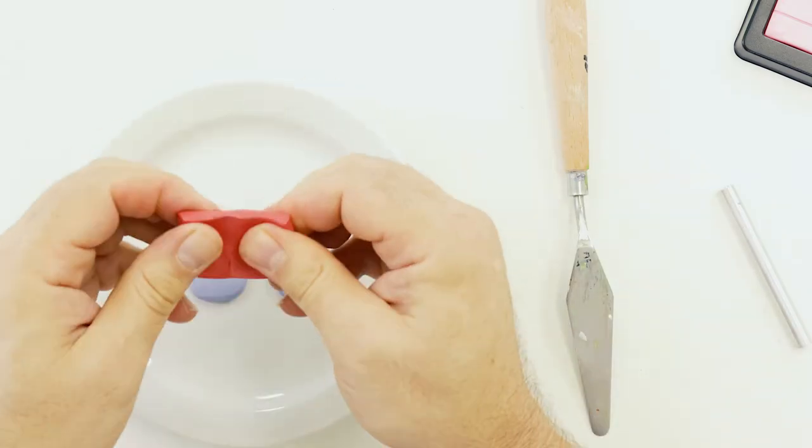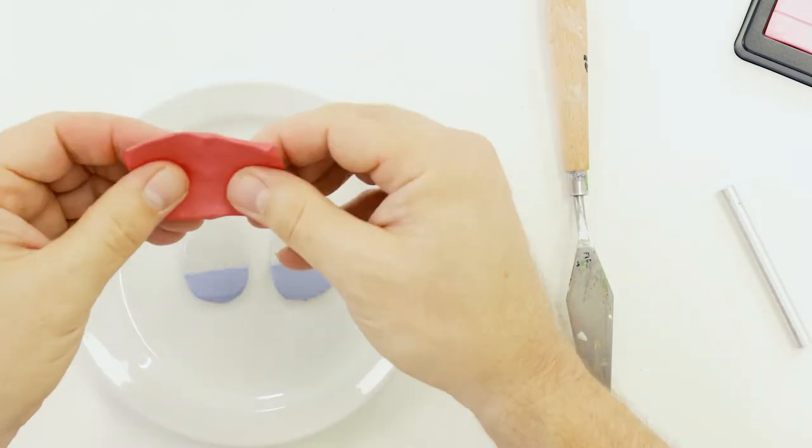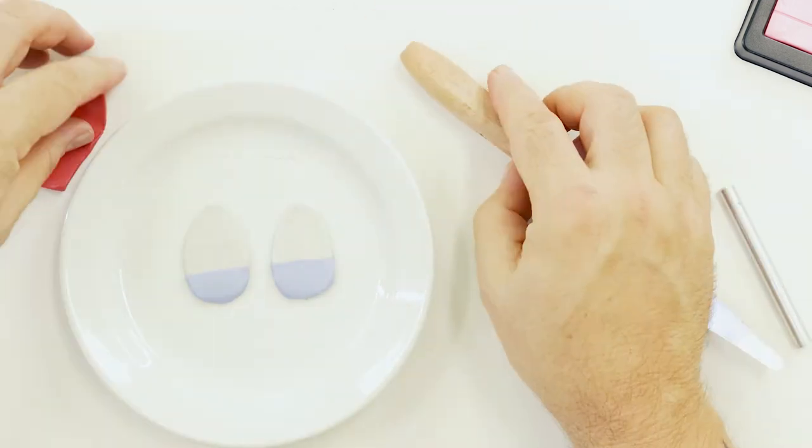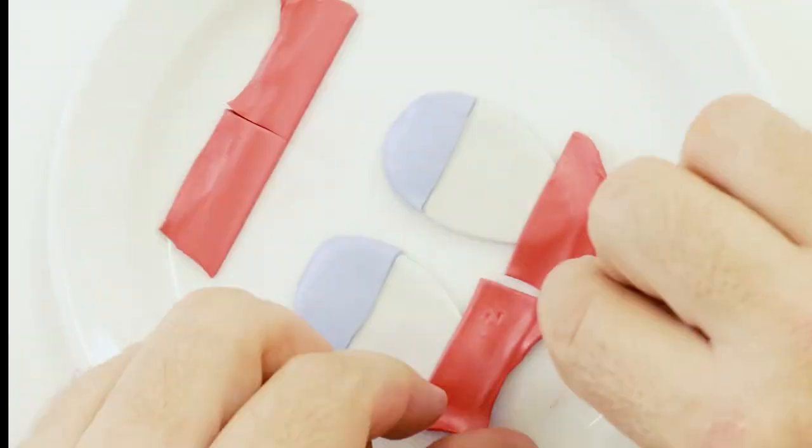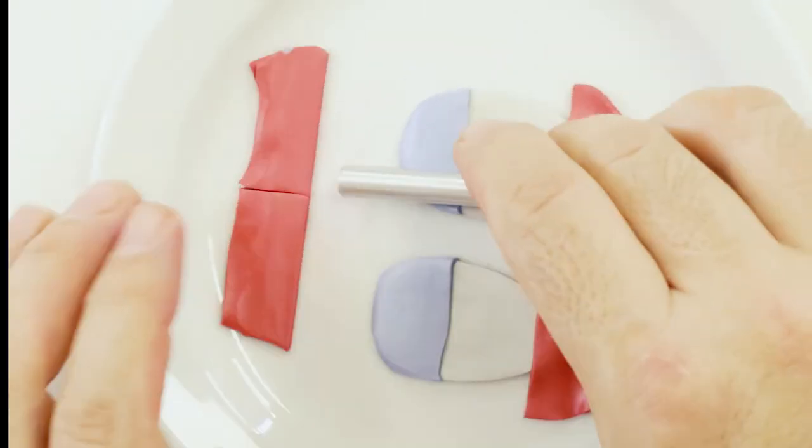Next we roll out a sheet of metallic red. Cut a straight edge and lay this onto the top third of the egg. Roll it flat and again profile cut it to the shape of the egg then remove the waste.